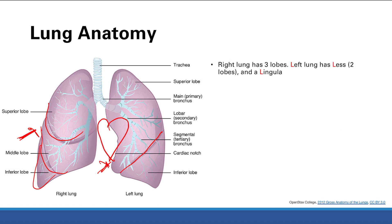Now let's think about aspiration. If you swallow something and it goes down your trachea instead of your esophagus, where is it going to go? It's based on anatomy — it's easier to go down the right side of the lung because the left has more of a higher angle. So if you have aspiration pneumonia, which is inflammation of the lung resulting from a foreign body, you're most likely going to see it on the right side.